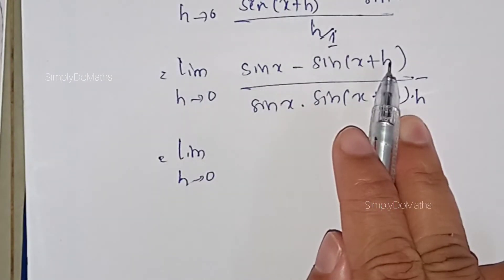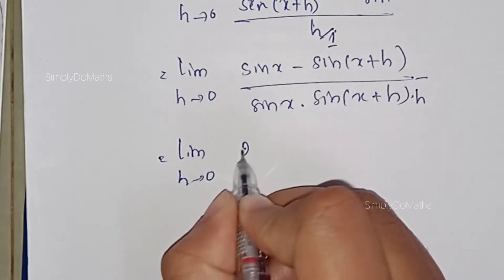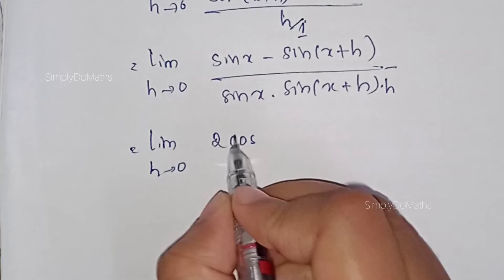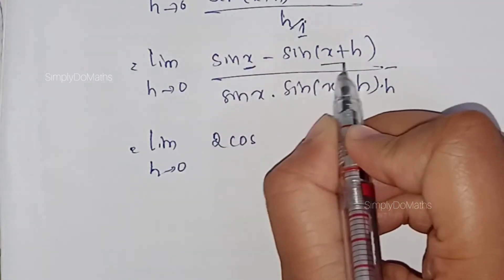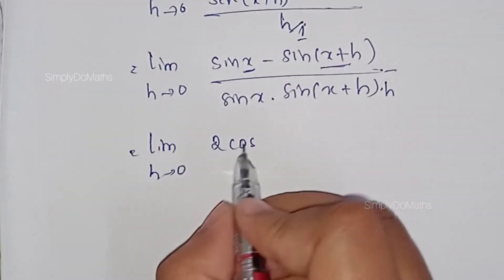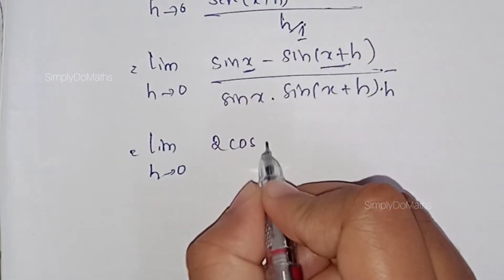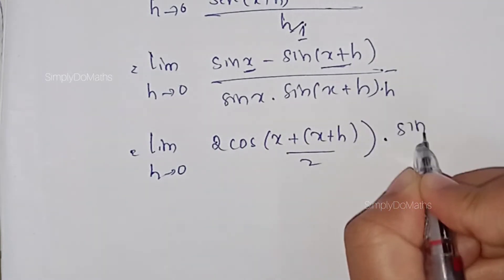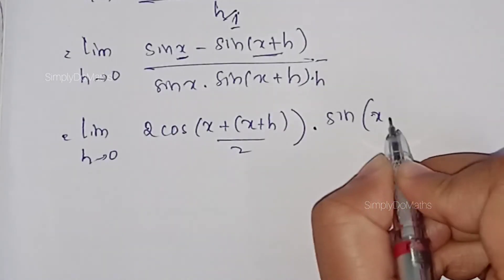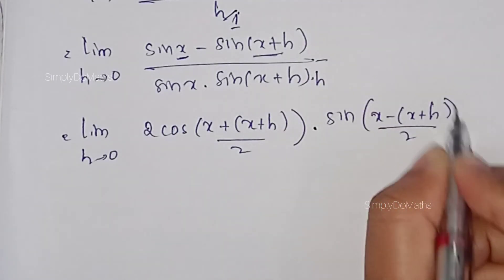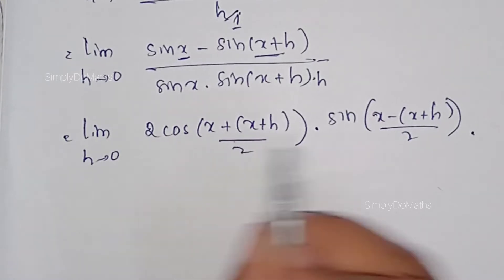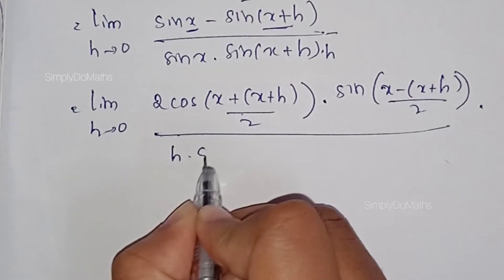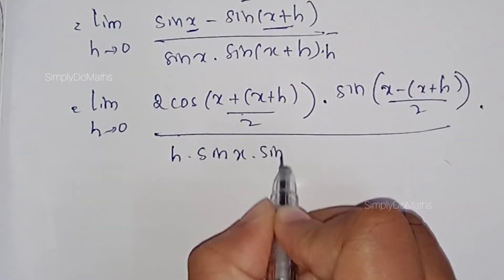Now, sin A minus sin B equals 2 cos((A+B)/2) · sin((A−B)/2). So here, with A = x and B = x+h: 2 cos((x + x+h)/2) · sin((x − (x+h))/2), which gives 2 cos((2x+h)/2) · sin((−h)/2), all divided by h · sin x · sin(x+h).